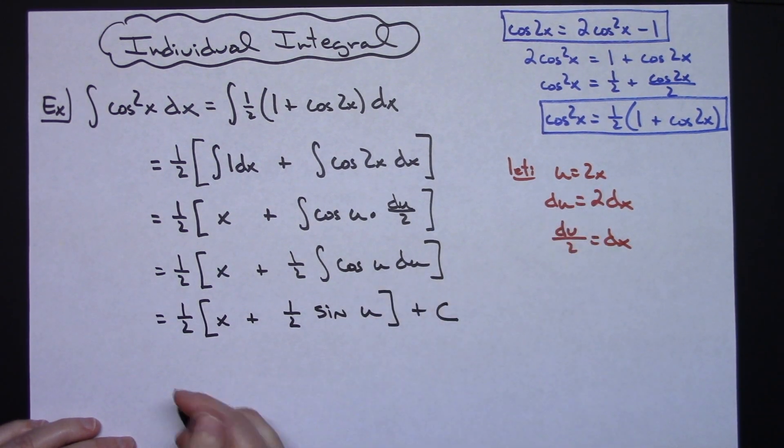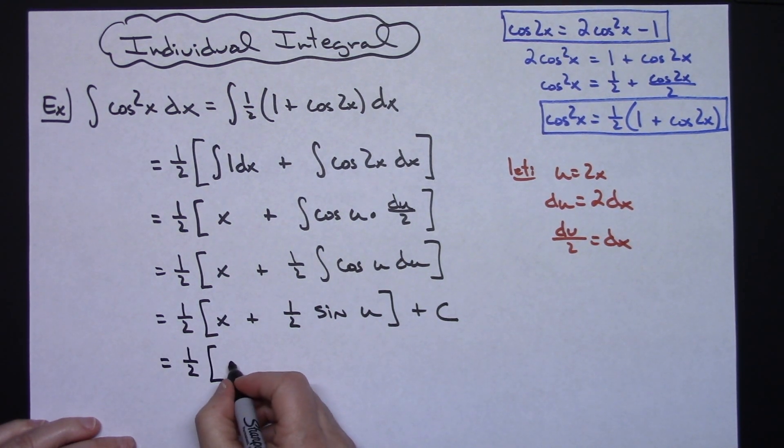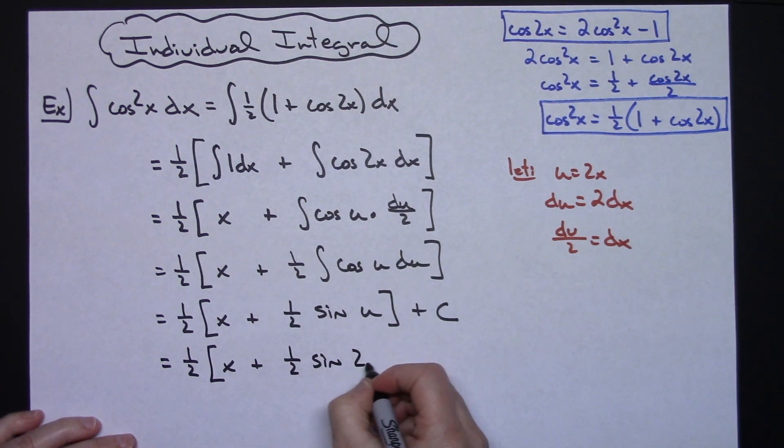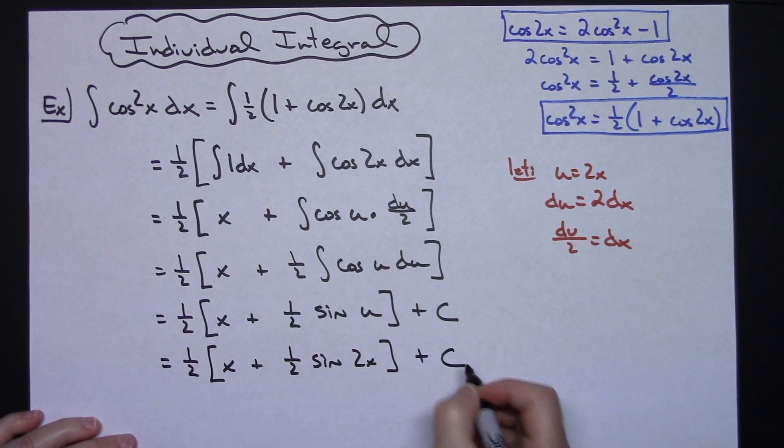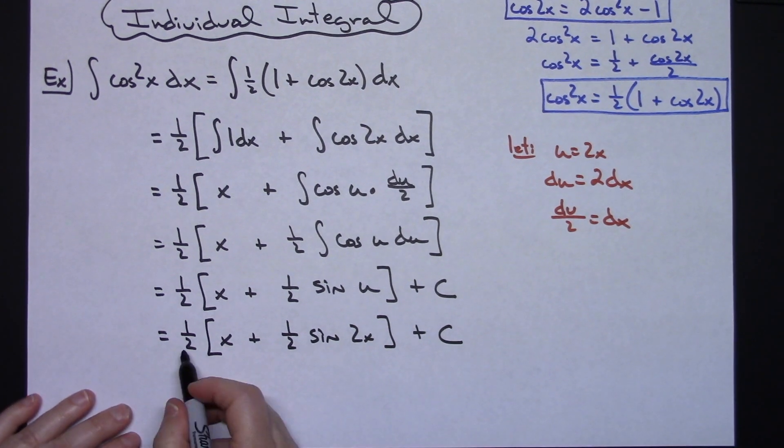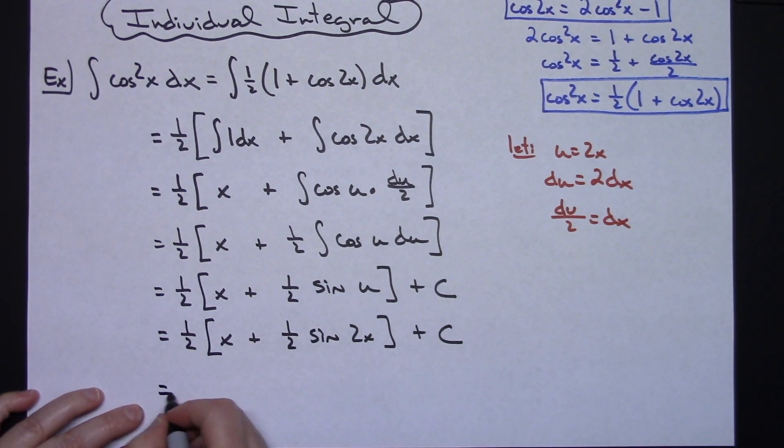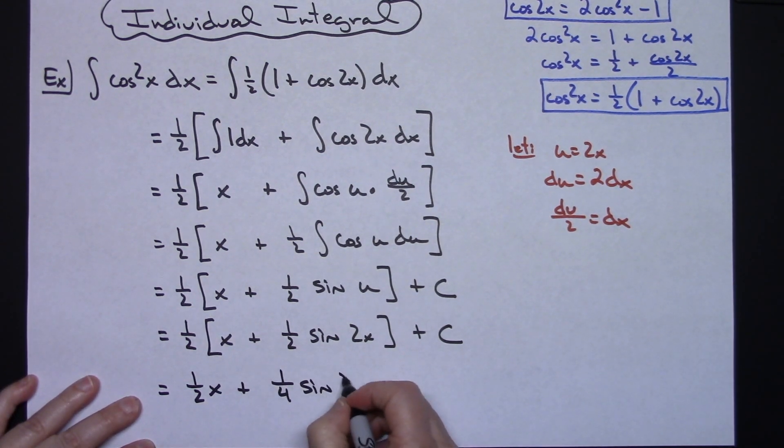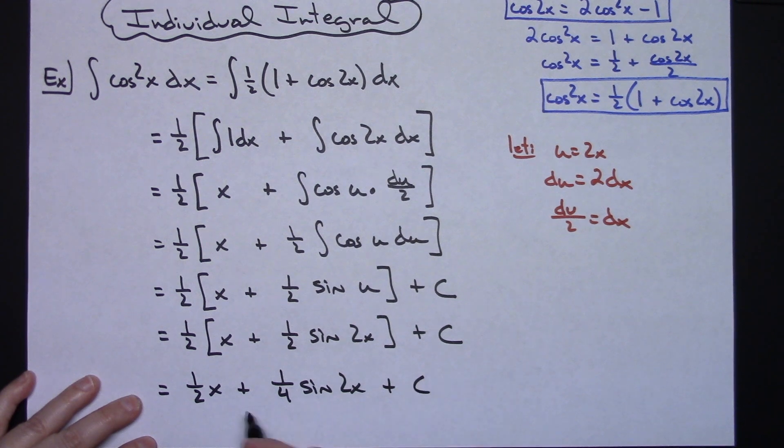I can replace u with what I said it was going to be. 1 half times quantity x plus 1 half sine 2x with our plus C on the end. And the last thing would just be to distribute that 1 half there. So we'll have 1 half x plus 1 fourth sine 2x plus C.